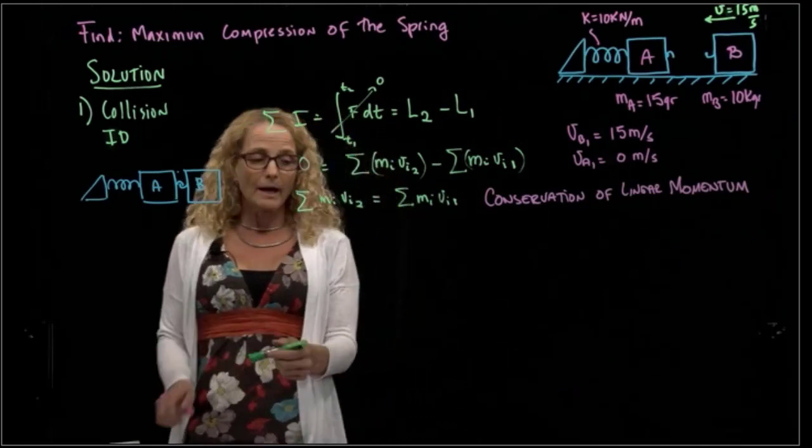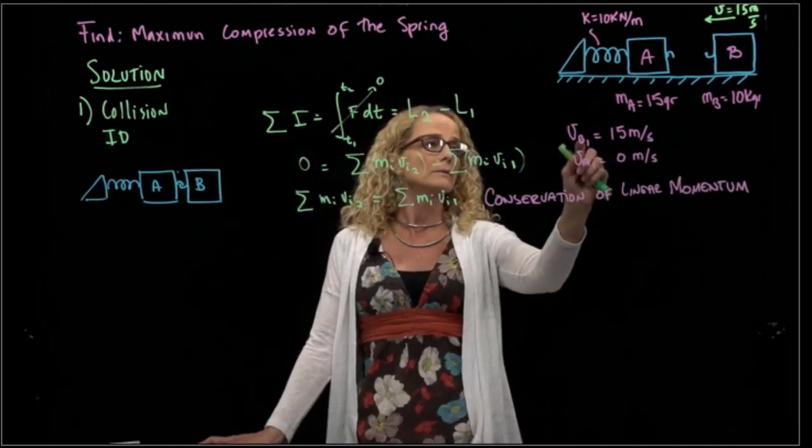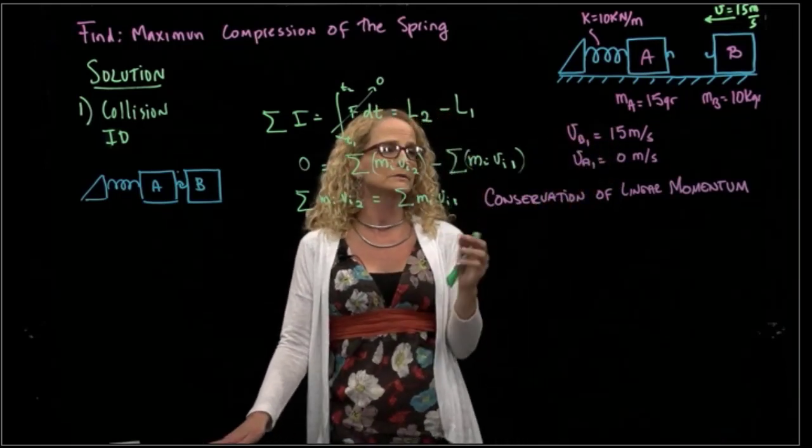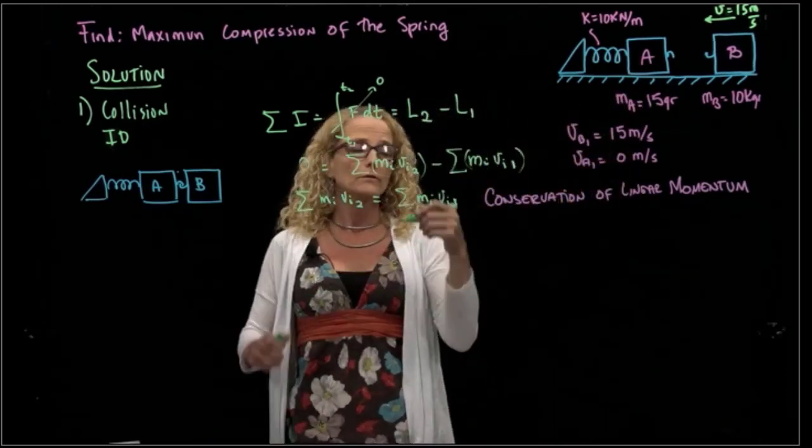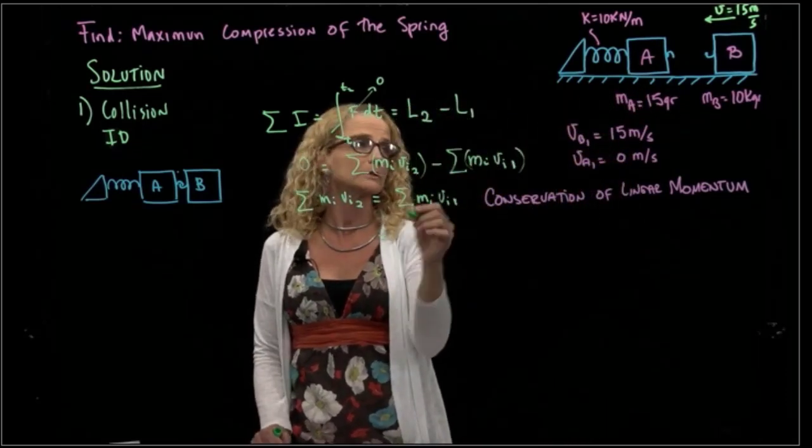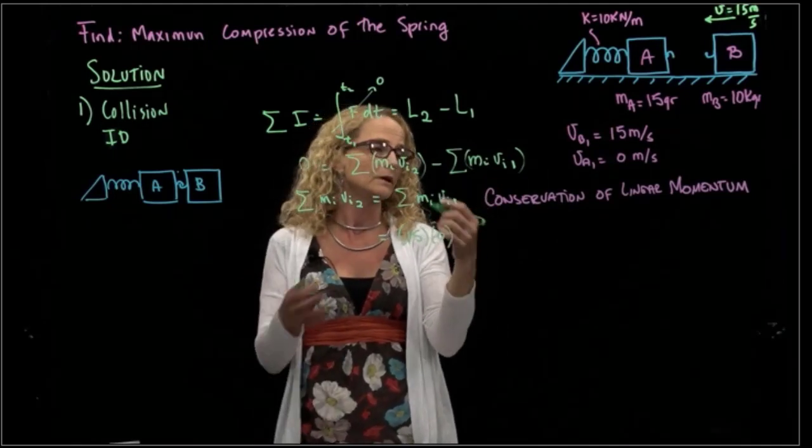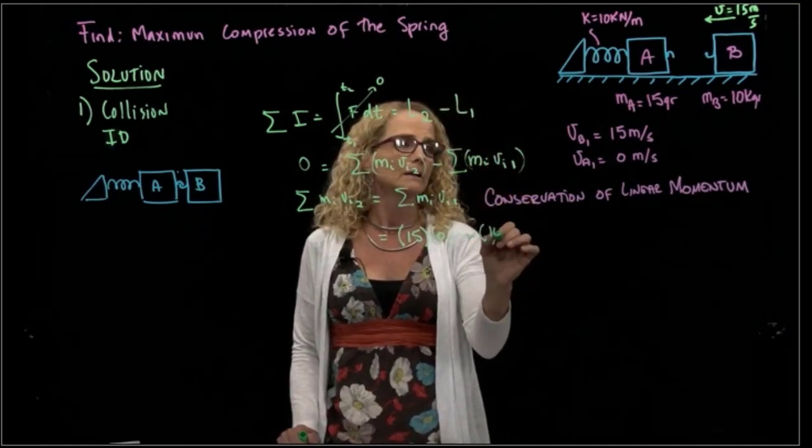Okay, so what we have, we have the velocities in position one. They tell us that the velocity of B is 15 meters per second, and the velocity of A is zero. And we know the mass of each of these boxes, so we could actually say this is 15 times zero. Let me be very explicit.